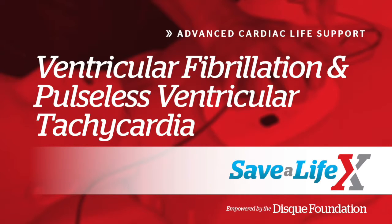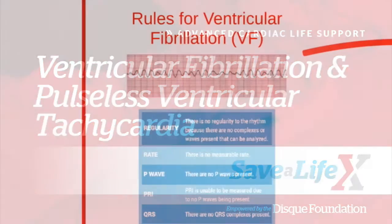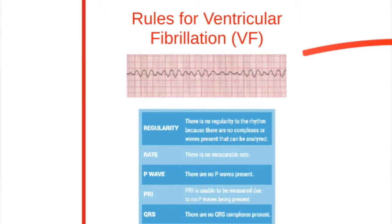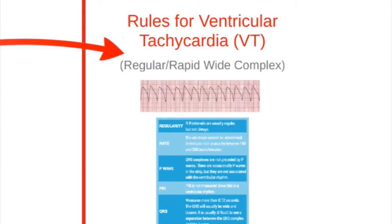This lesson covers ventricular fibrillation and pulseless ventricular tachycardia. VF and VT are life-threatening cardiac rhythms that result in ineffective ventricular contractions. VF is a rapid quivering of the ventricles rather than a forceful contraction, and is not synchronized with atrial contractions. In VT, the ventricles contract more than 100 times per minute. Pulseless VT occurs when rapidly contracting ventricles are pumping blood insufficiently.